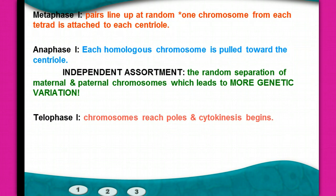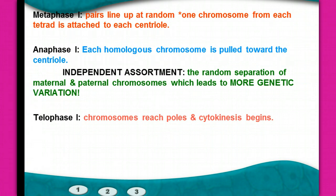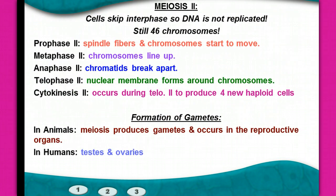You don't know which egg is going to get fertilized — it might have a mom chromosome or a dad chromosome. That's what's going on in anaphase: the separation of those homologous pairs. Then in telophase, the chromosomes reach the poles and cytokinesis begins.